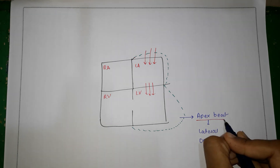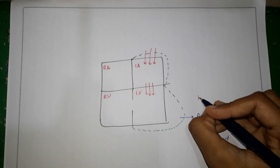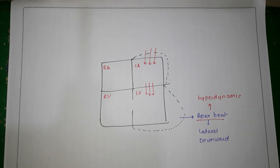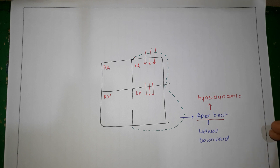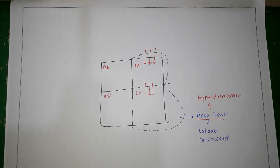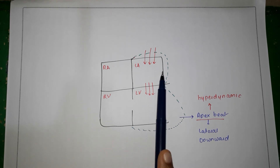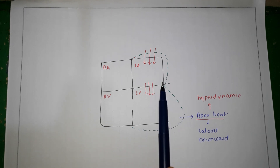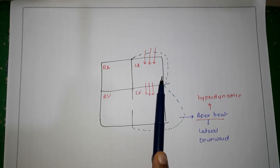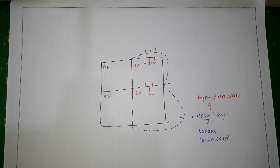The apex beat present in this condition will be a hyperdynamic beat, because it's a volume overload condition. A hyperdynamic apex beat is felt over two intercostal spaces, is lateral and outward, and a thrust is felt which lifts your finger, sustains, and then falls. Regarding LA enlargement, this is better appreciated on a chest X-ray rather than as a palpatory finding.